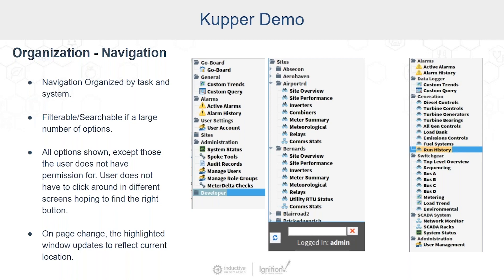Each of these sites has around five to seven windows associated with them. This tree allows filtering the window list by typing in part of the name, and it dynamically changes to show only those sites to which the user has allowed access. The image in the middle shows the sites folder expanded. Nearly all of those windows are shared between sites using templates and scripting to automate their configuration.